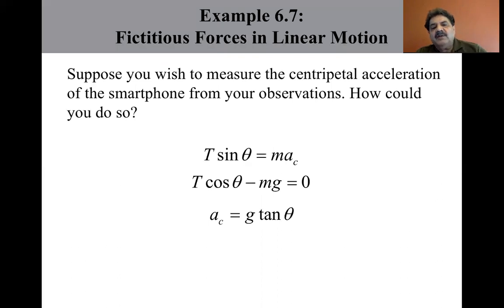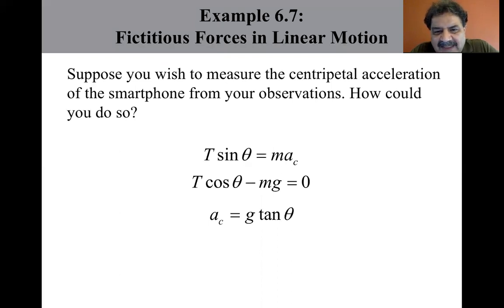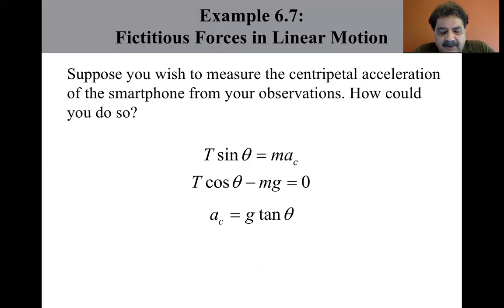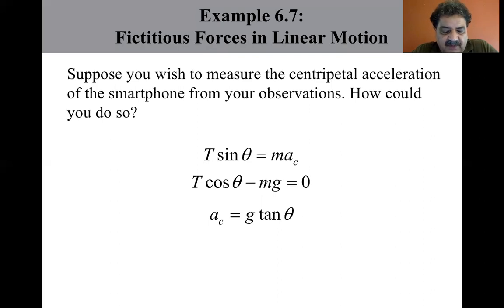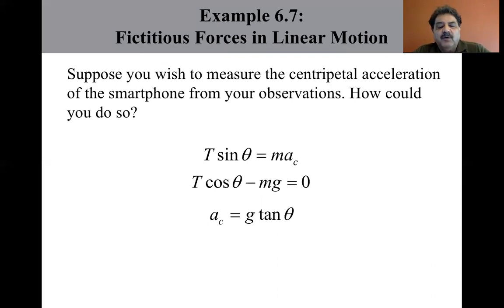Dividing the two equations, the T's and mass cancel out, leaving sin θ over cos θ equals a_c over g. Multiplying both sides by g gives the centripetal acceleration equals g tan θ. This ends our discussion of motion in accelerated frames. The next section we will cover is section 6.4, motion in the presence of resistive forces.